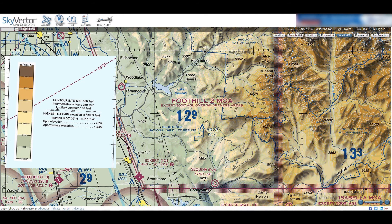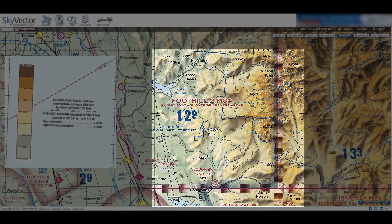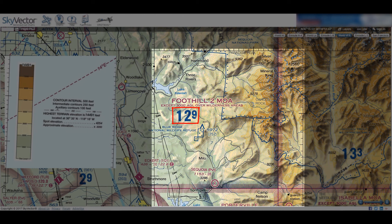Finally, each latitude-longitude grid box contains bold blue numbers which mark the highest elevation, be it terrain or man-made. This number is in hundreds of feet MSL. For example, in this grid square, the highest point is 12,900 feet MSL.